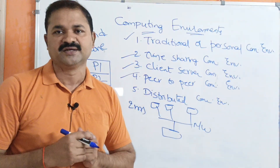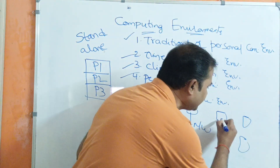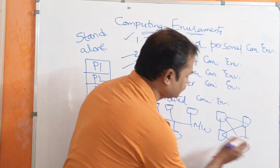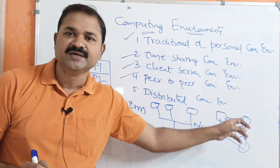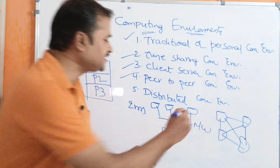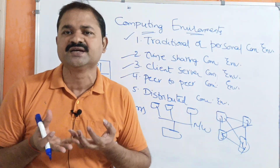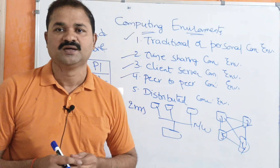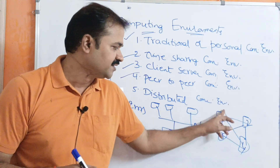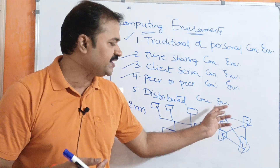The fourth one is peer-to-peer computing environment. Here we have multiple computers and all those computers are connected with one another. Each computer acts as both client and server. For example, if the first computer wants some data from the fourth computer, the first computer becomes the client and the fourth computer becomes the server. The first computer sends a request, the fourth computer receives it, processes it, and provides a response.